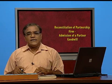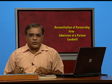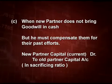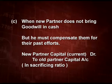The third method is when the new partner is unable to bring in cash for his share of goodwill. In that case, he must compensate the old partners for their past efforts. The entry is: new partner's capital or current account debit to old partners' capital or current account in sacrificing ratio. If we are following the fixed capital system, there are two accounts — capital account and current account — so we use the current account. In the fluctuating capital method, only one account is made, so we use the capital account.